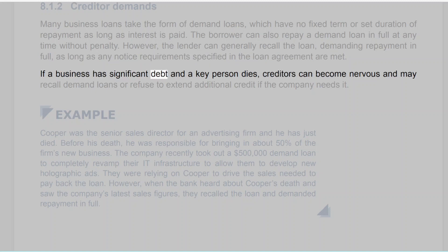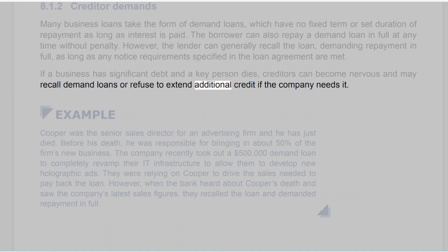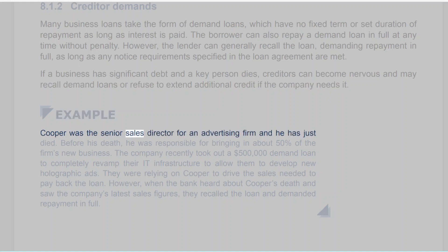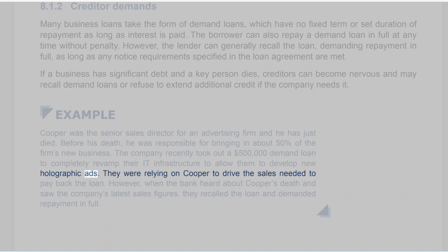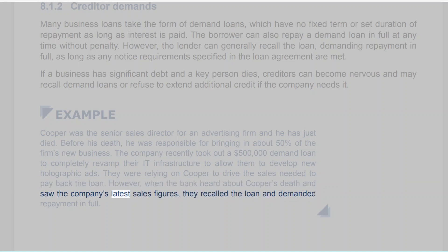If a business has significant debt and a key person dies, creditors can become nervous and may recall demand loans or refuse to extend additional credit. Example: Cooper was the senior sales director for an advertising firm, and he has just died. Before his death, he was responsible for bringing in about 50% of the firm's new business. The company recently took out a $500,000 demand loan to completely revamp their IT infrastructure to develop new holographic ads. They were relying on Cooper to drive the sales needed to pay back the loan. However, when the bank heard about Cooper's death and saw the company's latest sales figures, they recalled the loan and demanded repayment in full.